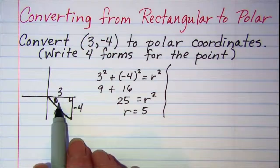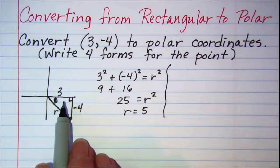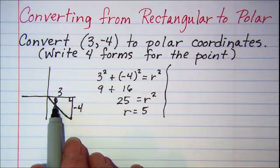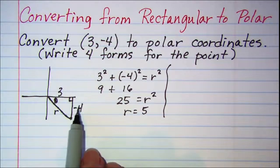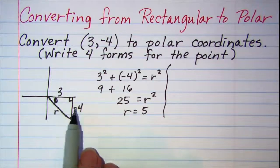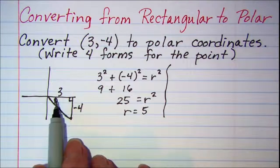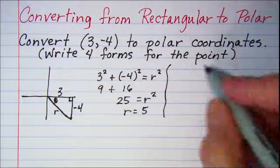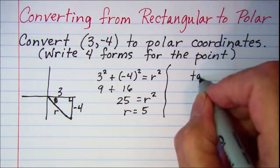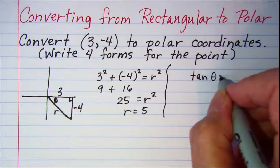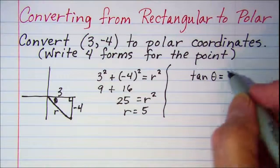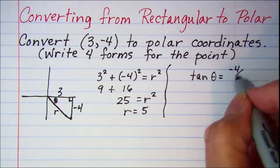Now to find θ, we'll need to use right triangle trig. The 3 is the side adjacent to θ, and the -4 is the side opposite θ. So we'll use tangent. We know tan(θ) = opposite/adjacent = -4/3.